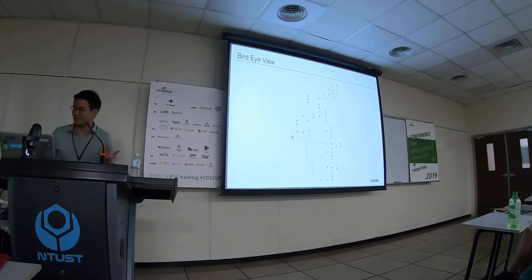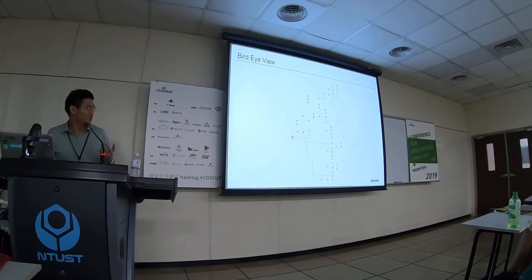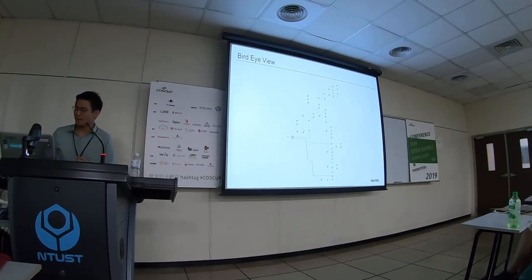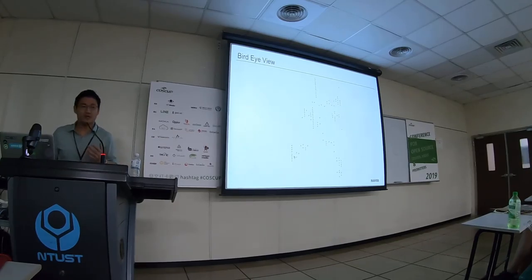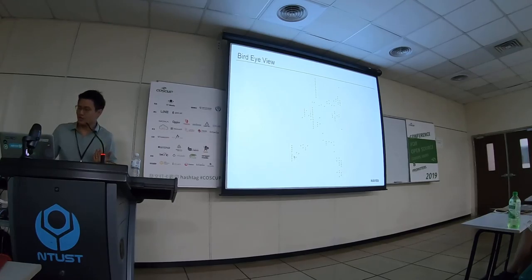This is another typical example of a microservice application. You can see the transactions going through App A to App B, all the way to the database. But in the real world, the server map gets much more complicated. If you have a microservice with this complexity, it will be much harder to operate without this server map.